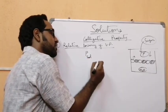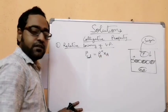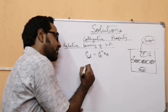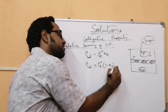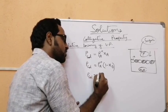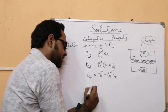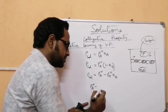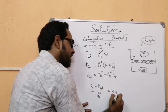According to Raoult's law, P_solution equals P_A° times x_A. We can write P_solution equals P_A° times (1 − x_B), which gives P_solution equals P_A° minus P_A° x_B. From this we can write: (P_A° − P_solution) / P_A° = x_B.